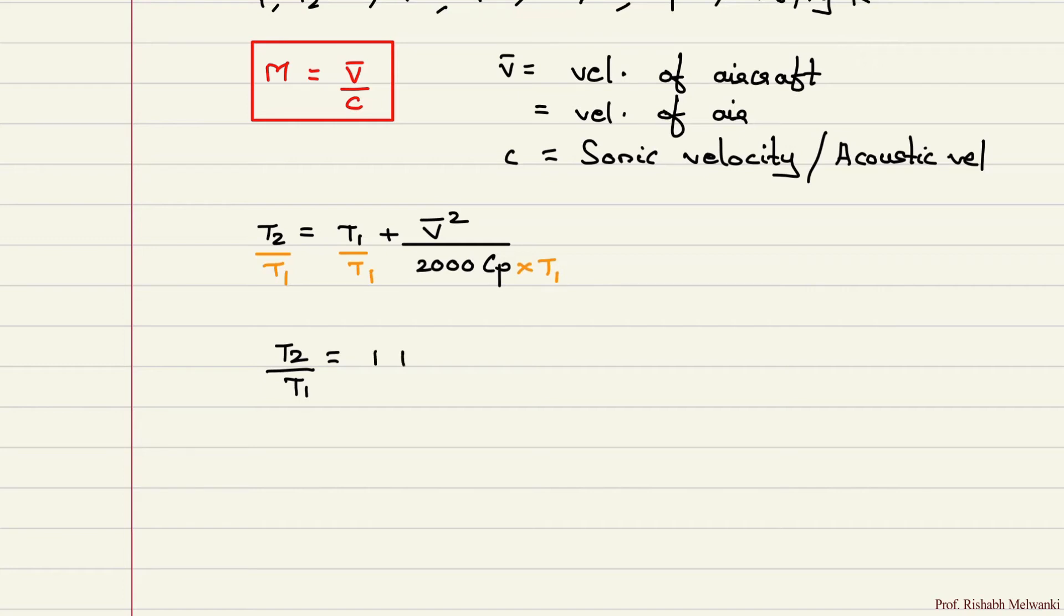1 plus V bar squared upon 2000 Cp into T1. Now what is Cp minus Cv relation? This you have studied in your thermodynamics. So we will do a small rough work over here.